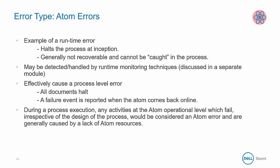The third type of error is an atom error. This is a runtime error in which all processing halts at the inception of the error. These errors are not recoverable or caught in the process, although you can detect them and handle them using certain runtime techniques. When an atom fails, it effectively causes a process-level error because all document processing is halted, and a failure event is reported once the atom comes back online. Any activities at the atom operational level that fail, irrespective of the process design, are considered atom errors and are generally caused by a lack of atom resources.